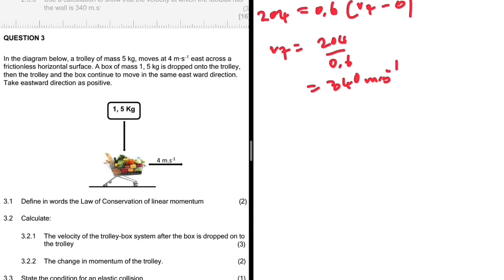Then the trolley and the box continue to move in the same eastward direction. Take eastward direction as positive. 3.1, I'm going to let you state the law of conservation of linear momentum, and then 3.2.1, we're supposed to calculate the velocity of the trolley-box system after the box is dropped onto the trolley.